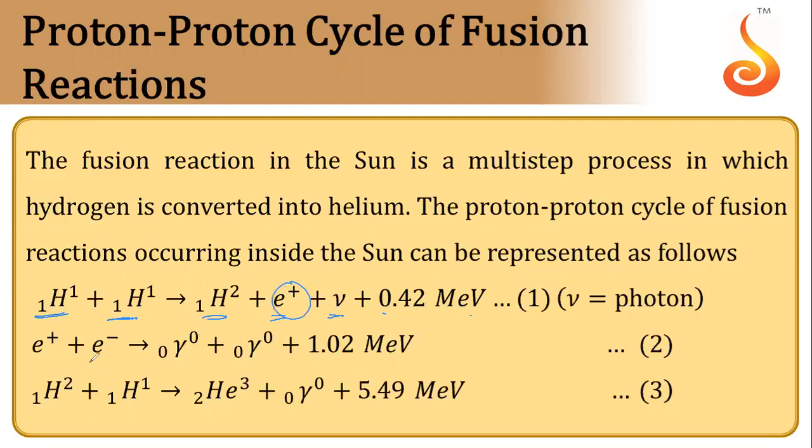Then this positron and electron will combine to form gamma radiation and 1.02 MeV energy is released.